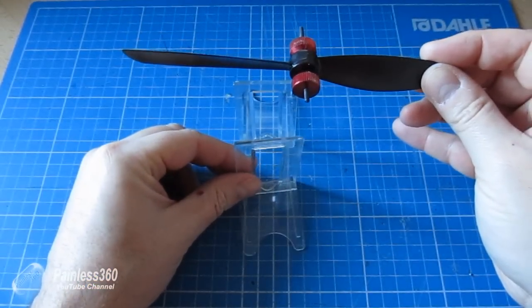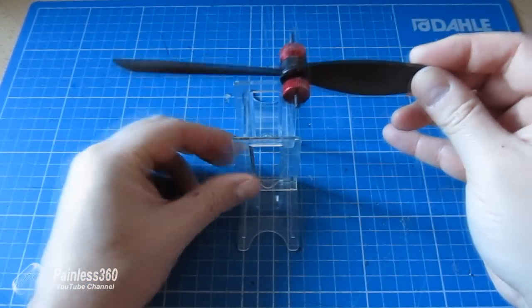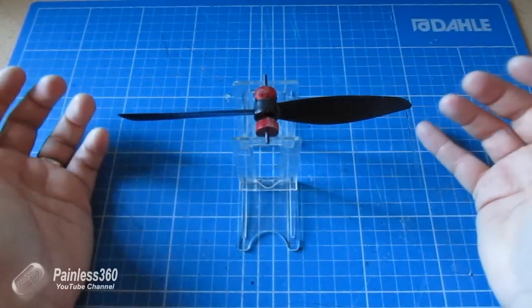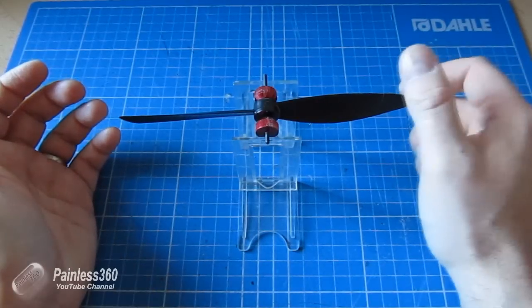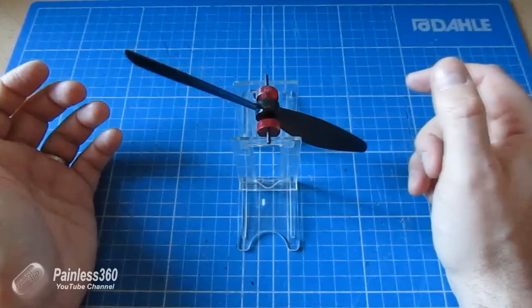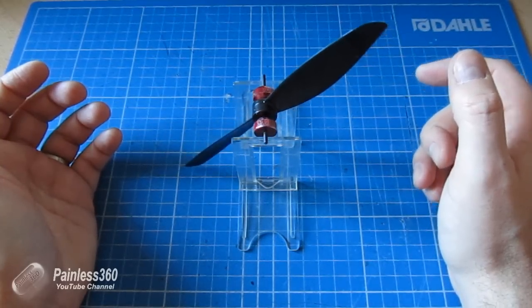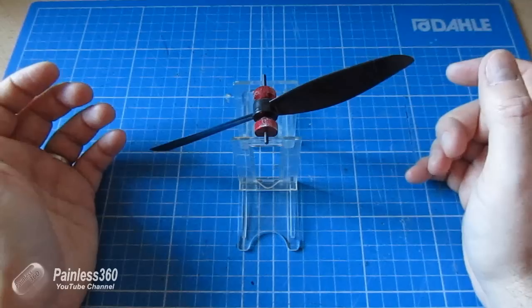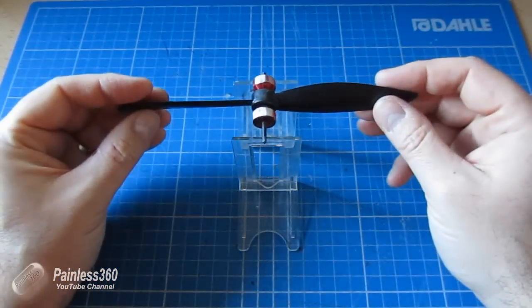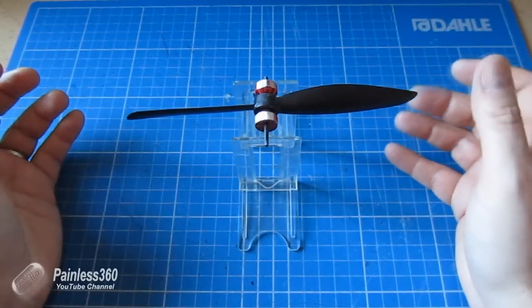So what I'll do is I'll put it back on the balancer. Let's see how close we are. Remember, the heavier side is down here. And that's pretty well balanced—that's kind of just wandering around on its own. Heavier part is now on the top again.